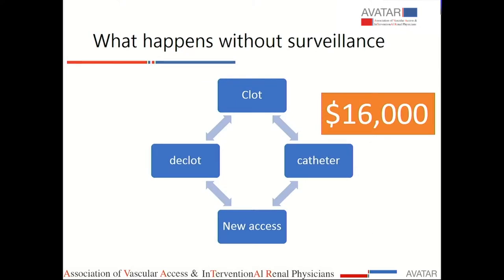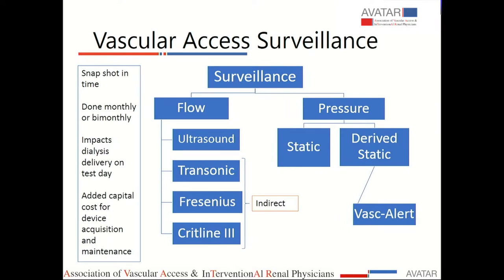If we don't save it, it clots. Now we have beautiful interventional techniques and we are able to open them up. If we can't open them, they go to a catheter, and then you get a new access. But how much does this cost? An access conversion — a functioning access into a new access via a catheter — based on our internal financial analysis, this is not published data, it costs about $16,000 every time you have a functioning fistula or graft that gets clotted and abandoned and you're now putting a catheter and a new access in. So it not only affects the patient, it also affects everybody's bottom line.